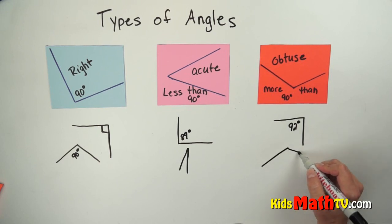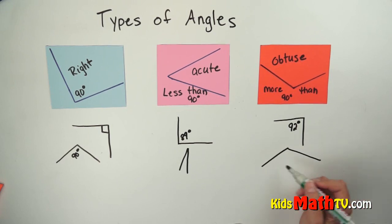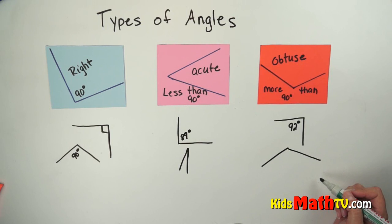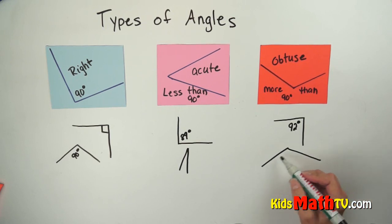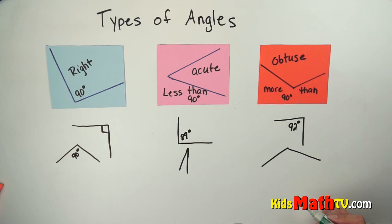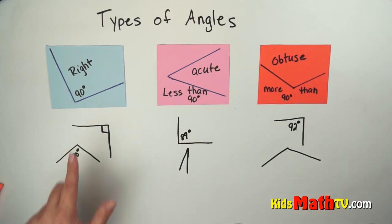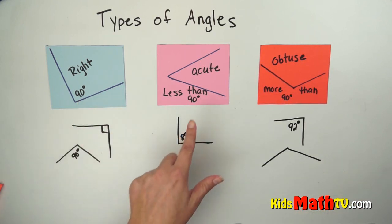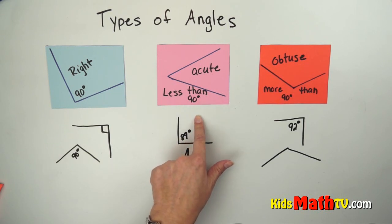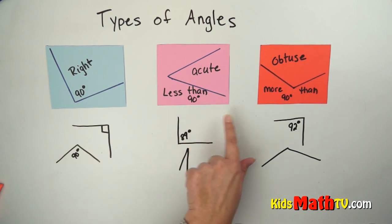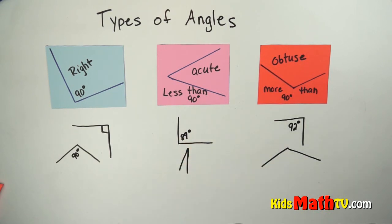Any angle that is greater than 90 degrees is an obtuse angle. This is obviously greater than 90 degrees so it is an obtuse angle. So our three types of angles are: a right angle at 90 degrees, an acute angle at less than 90 degrees, and an obtuse angle greater than 90 degrees. That brings us to the end of our lesson on types of angles.